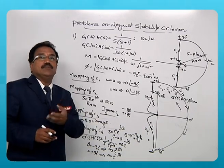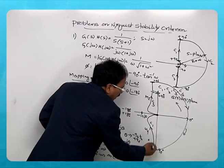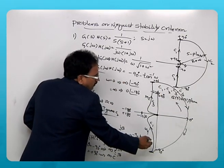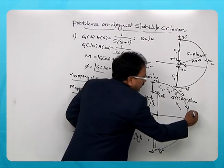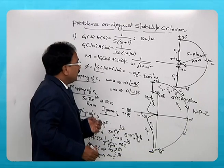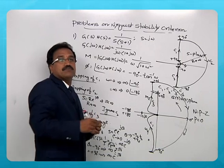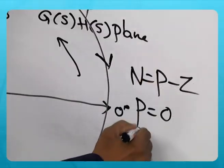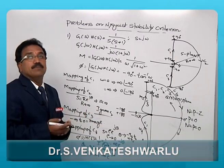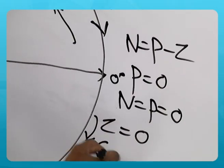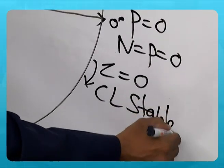Now, the critical point is at −1 + j0. Looking at the Nyquist plot, it starts and goes clockwise but does not encircle the −1 + j0 point. The stability criterion is N = P − Z, where P is the number of poles in the right half of the S-plane. In this case P = 0 from the given loop transfer function, so N must also be 0. Since N = 0 and P = 0, Z = 0, and we can conclude that the closed loop system is stable.